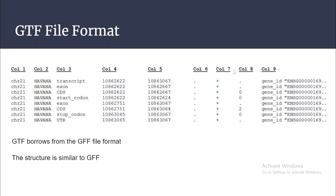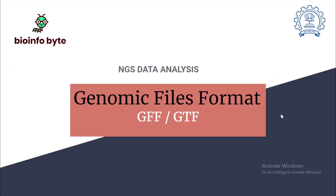For the GTF file format, since it was derived from GFF, the structure is somewhat similar to GFF. The only difference is in column 9. In GFF3, the attribute is written as 'gene_id = gene_name', while in GTF, the gene ID information is enclosed within double quotes. I hope these file formats will be useful for you when you are dealing with annotation. Thank you.